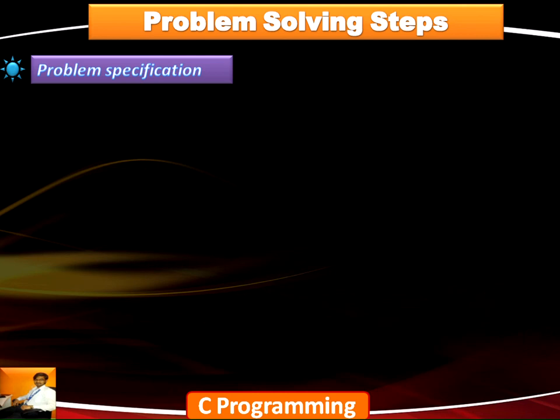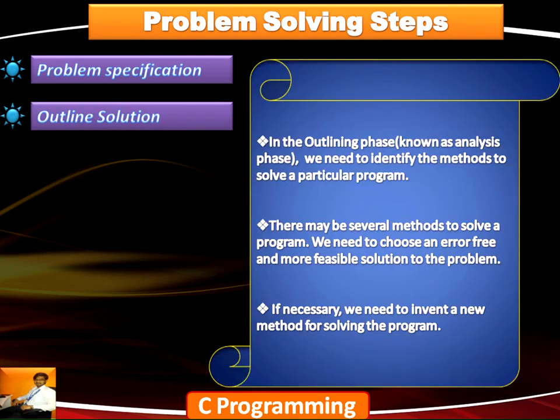Once we know the requirements, we need to outline all the specific solutions necessary for the problem to be solved, which we call the analysis phase. There may be several methods to solve a particular problem. We need to choose an error-free and more feasible solution — one that takes less time, less space, is easy to understand and easy to code. If necessary, we need to invent a new method for solving the problem.